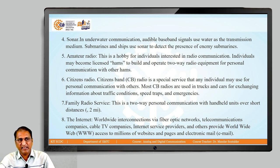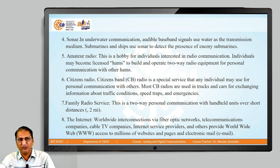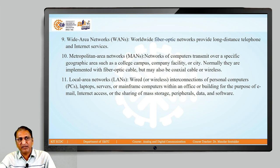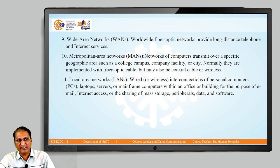The internet provides worldwide interconnections via fiber optic networks. Telecommunications companies, cable TV companies, internet service providers and others provide worldwide web (www) access to millions of websites and electronic mail. Wide area networks (WANs) use worldwide fiber optic networks to provide long-distance telephone and internet services. Metropolitan area networks (MANs) transmit over a specific geographic area such as a college campus, company facility, or city. Local area networks (LANs) are wired or wireless connections of personal computers, laptops, servers, or mainframe computers within an office or building for email, internet access, or sharing of storage, data, and software.